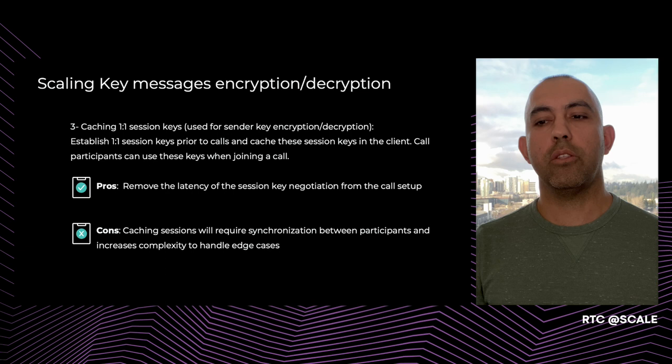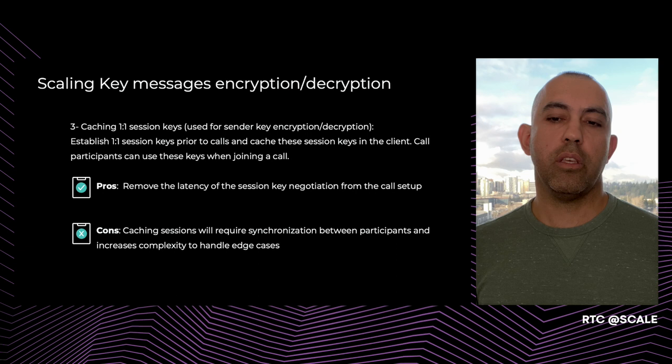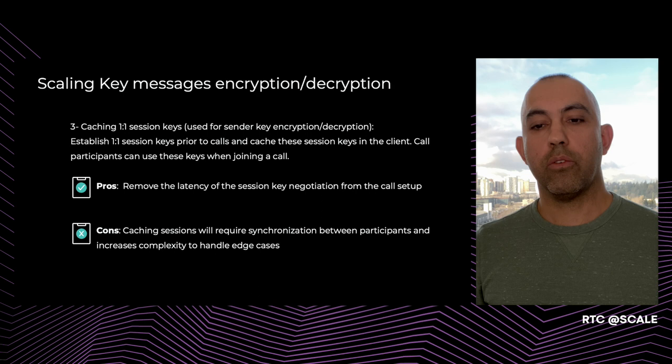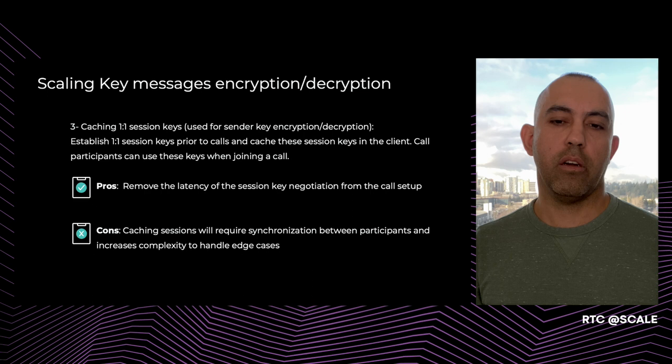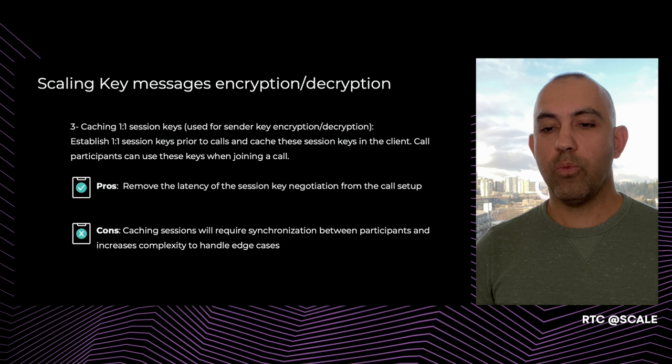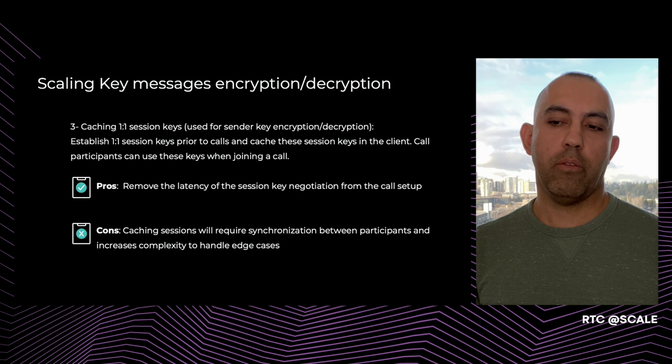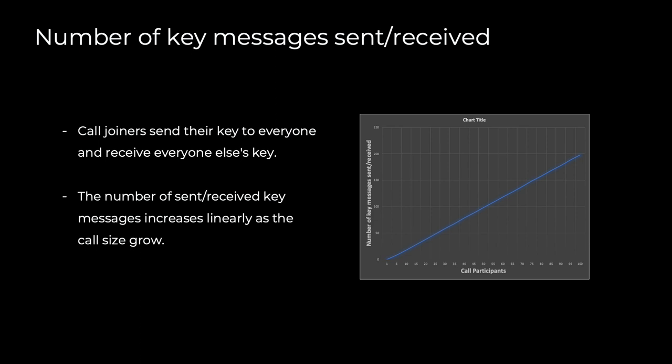A third solution is to cache not just the public keys but the session keys used to encrypt and decrypt the sender keys. Call participants can use the cached session key when joining a call to encrypt and decrypt their sender key. This reduces encryption and decryption latency to be close to symmetric cryptography and removes the latency of establishing a session key from the call setup path. However, it requires synchronization between participants on which session key is used, and can increase complexity in handling edge cases.